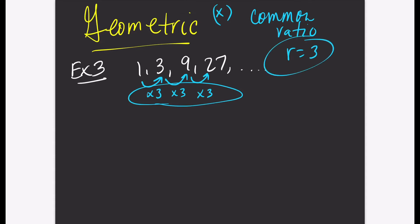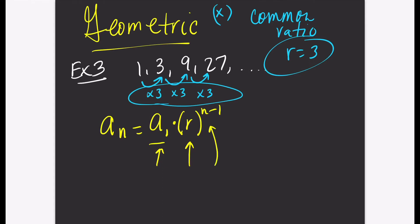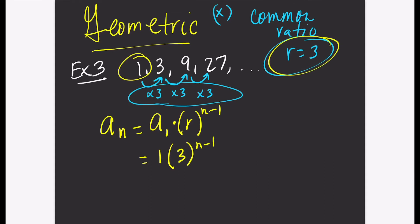Let's find the explicit rule, or nth term. Since this is geometric, the formula is different. For geometric sequences you use: a sub n equals a sub 1 times r to the power of n minus 1. A sub 1 is the first term, r is the common ratio, n is the term number, and a sub n is the actual term. The first term in this sequence is 1 and r is 3. For geometric there's nothing to simplify, so you are done: a sub n equals 1 times 3 to the power of n minus 1.